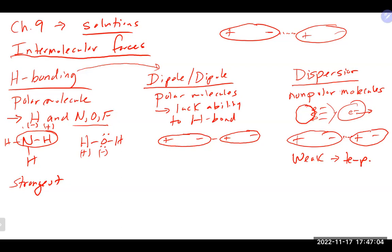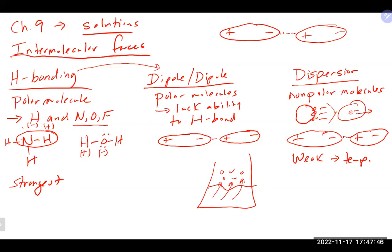We also talked about cohesive and adhesive forces, surface tension, and vapor pressure. Things with weak intermolecular forces typically have a higher vapor pressure — the pressure of gas above the liquid. Weak intermolecular forces allow molecules to escape to the gas phase easily, producing more gas molecules above the liquid and thus a higher vapor pressure. Stronger intermolecular forces keep molecules in the liquid phase longer, resulting in a lower vapor pressure.